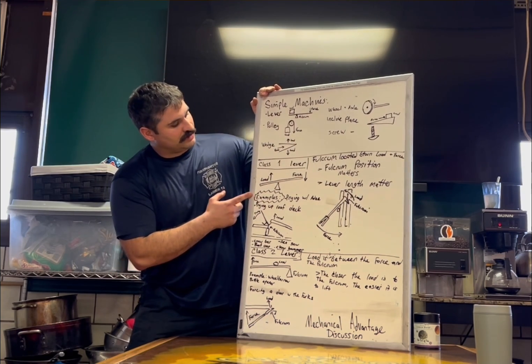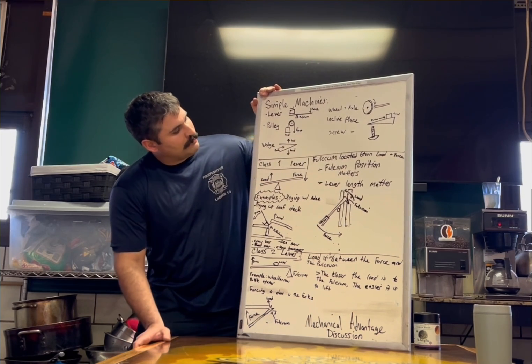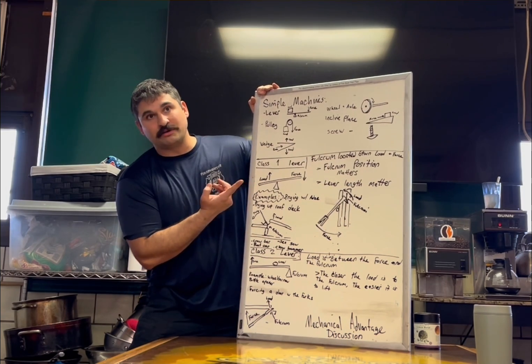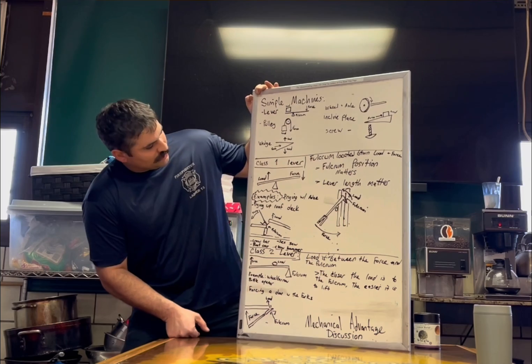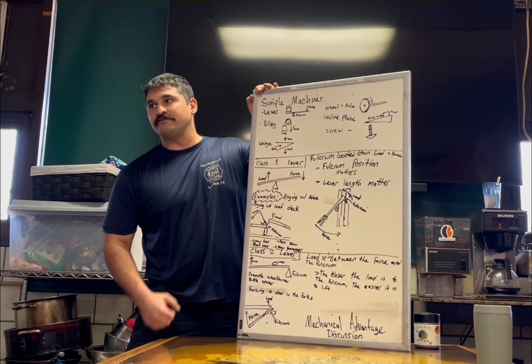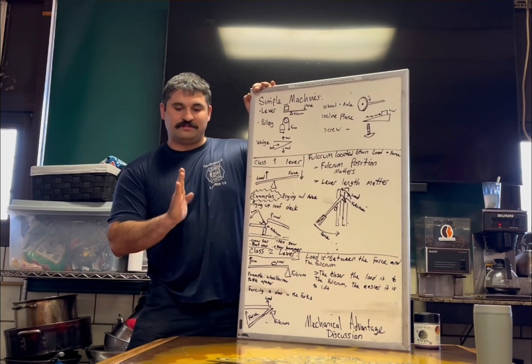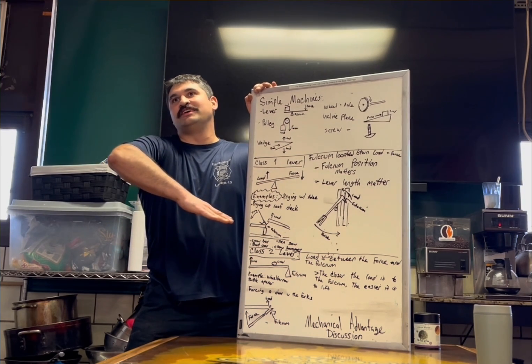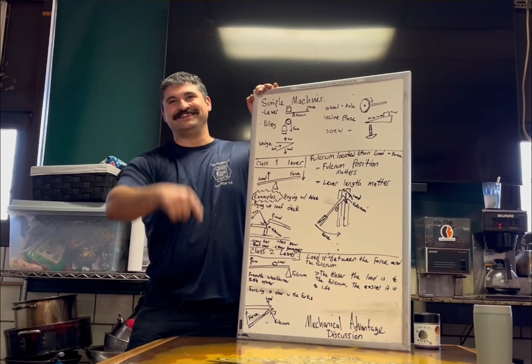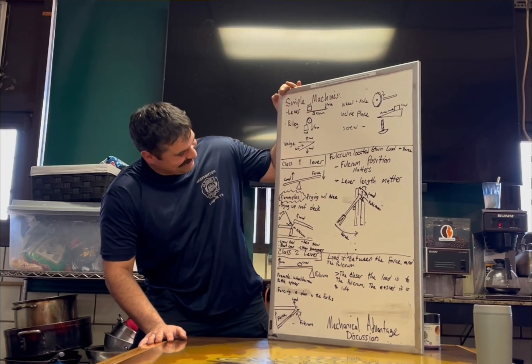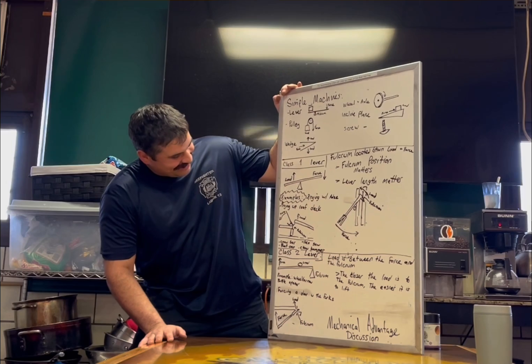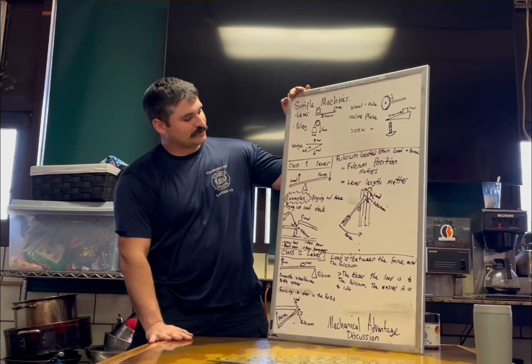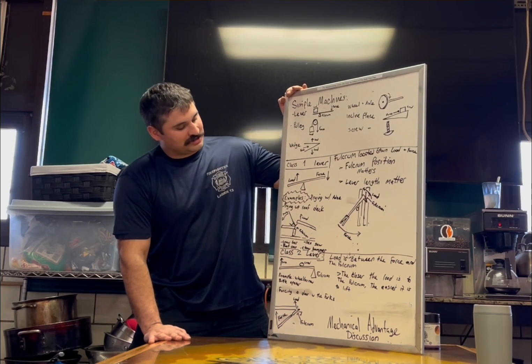Extremely briefly, a class one lever is a lever where the fulcrum is located between the load and the force. So, examples - common examples are seesaws, like a hammer, using a claw hammer to pull a nail out of a piece of wood. The fulcrum being the center balance point, the load being on one side of that seesaw and the force being on the other. Another example was a boat, you can imagine that seesaw motion.